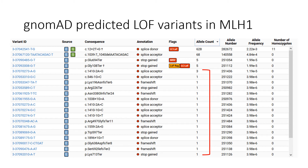These variants are predicted to result in nonsense-mediated decay and haploinsufficiency, and are therefore likely to cause Lynch syndrome. Most of these variants without some kind of QC or quality control flag indicating a potential issue with data quality are present in just one or a few individuals, but they're present.